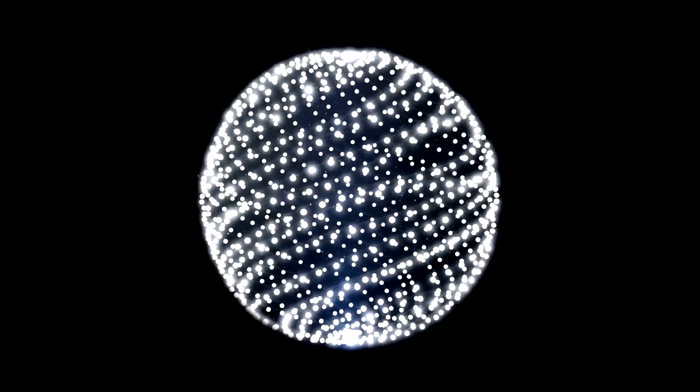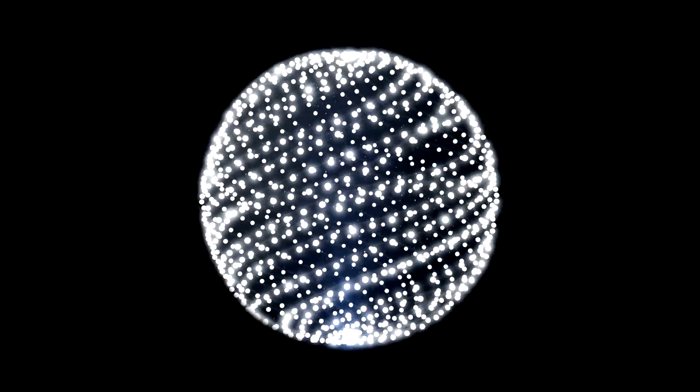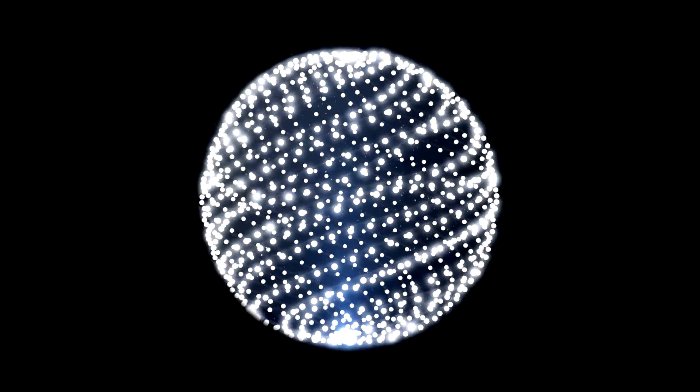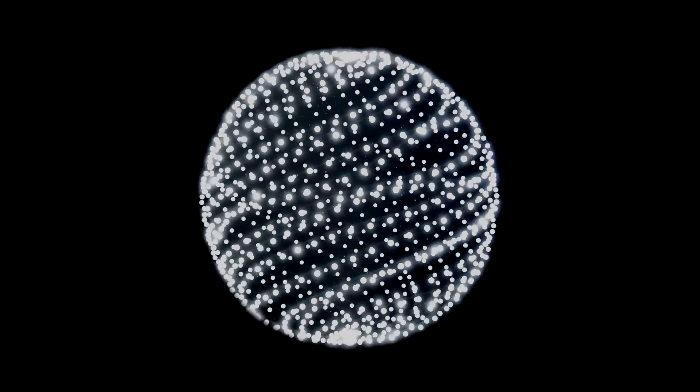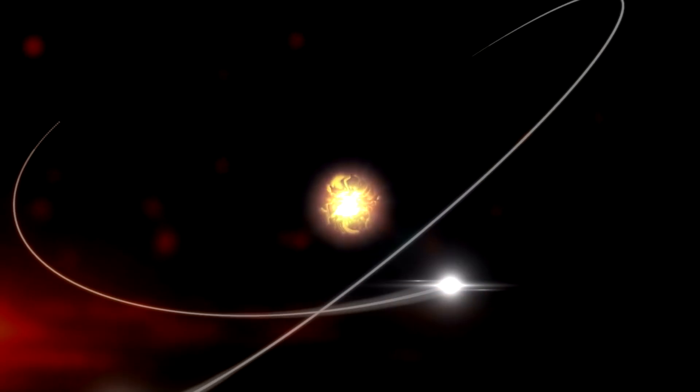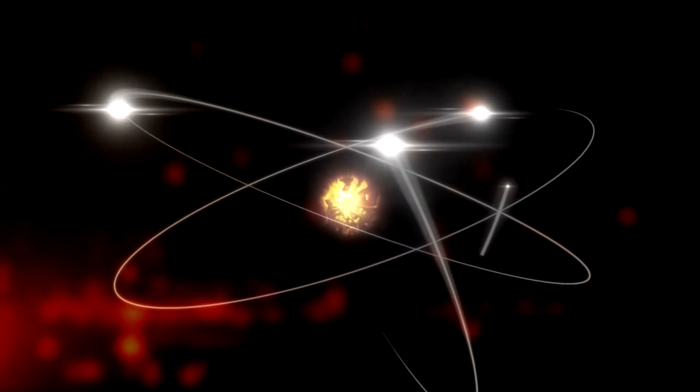For example, if we observe the electron well, we notice two rotational movements: around itself and around the core.